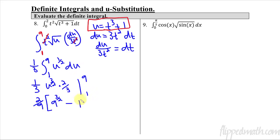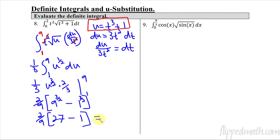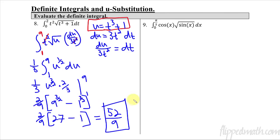Evaluate from 1 to 9. Since the exponent 3/2 means take the square root first then cube: square root of 9 is 3, 3 cubed is 27. Minus 1 to the 3/2 which is 1. That gives 26 times 2/9, or 52/9. We don't have to re-substitute u because we already accounted for that when we changed the boundaries.